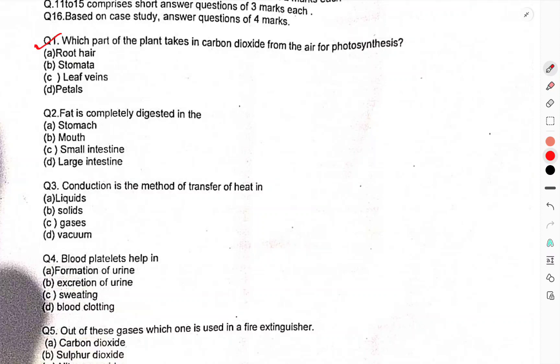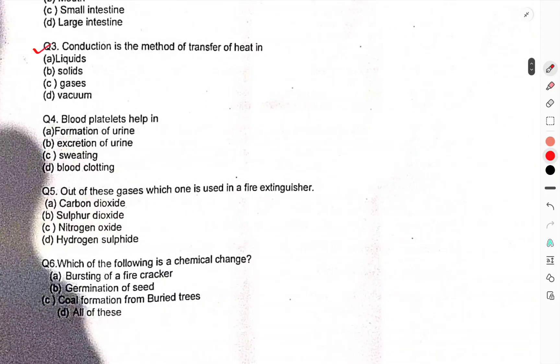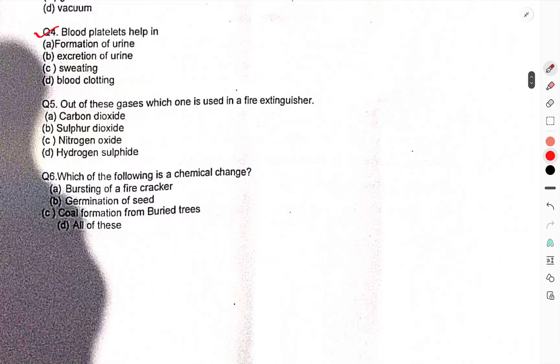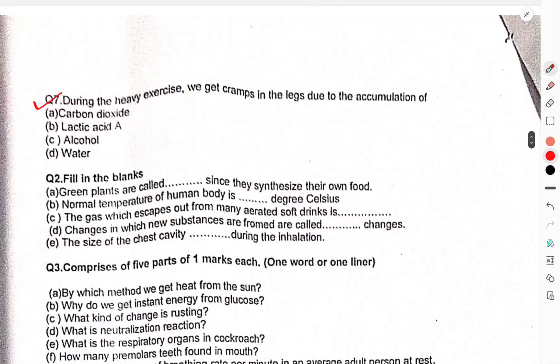First question: Which part of the plant takes in carbon dioxide from the air for photosynthesis? Question 2: Fat is completely digested in the... we have to choose the correct option. Question 3: Conduction is the method of transfer of heat. Question 4: Blood platelets help in...